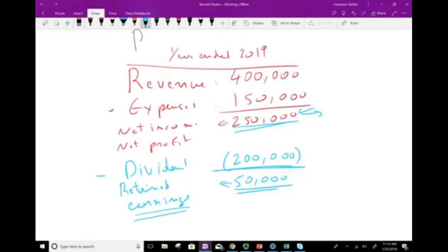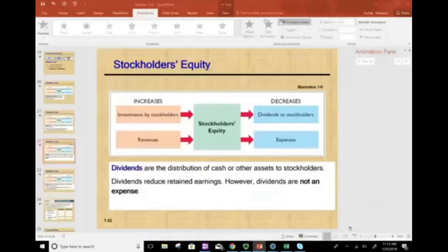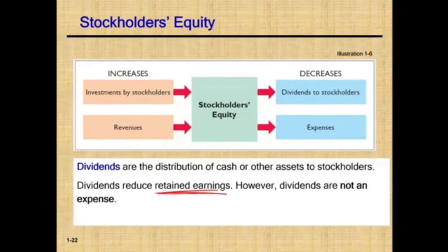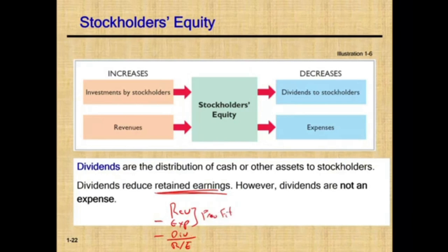Retained earnings is affected by three things: revenues, expenses, and dividends. Retained earnings equals revenues minus expenses minus dividends. Dividend reduces retained earnings because it reduces the amount kept. Revenues minus expenses equals profit; profit minus dividends equals retained earnings. However, dividends are not expenses — expenses are costs to operate the business, dividends are a way to reward shareholders. Don't confuse expenses with dividends, although both reduce retained earnings.